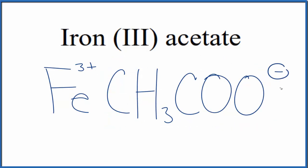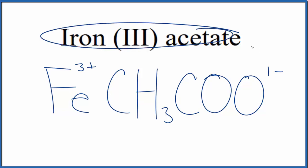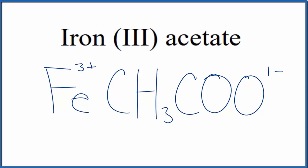So since we have 1 minus and 3+, these numbers need to add up to 0. This is a neutral compound — it doesn't say ion after it. So to make these numbers add up to 0, we could put a 3 here, so we would have 3 of these acetate ions. 3 times 1 minus would be 3 minus, which balances out the 3+.